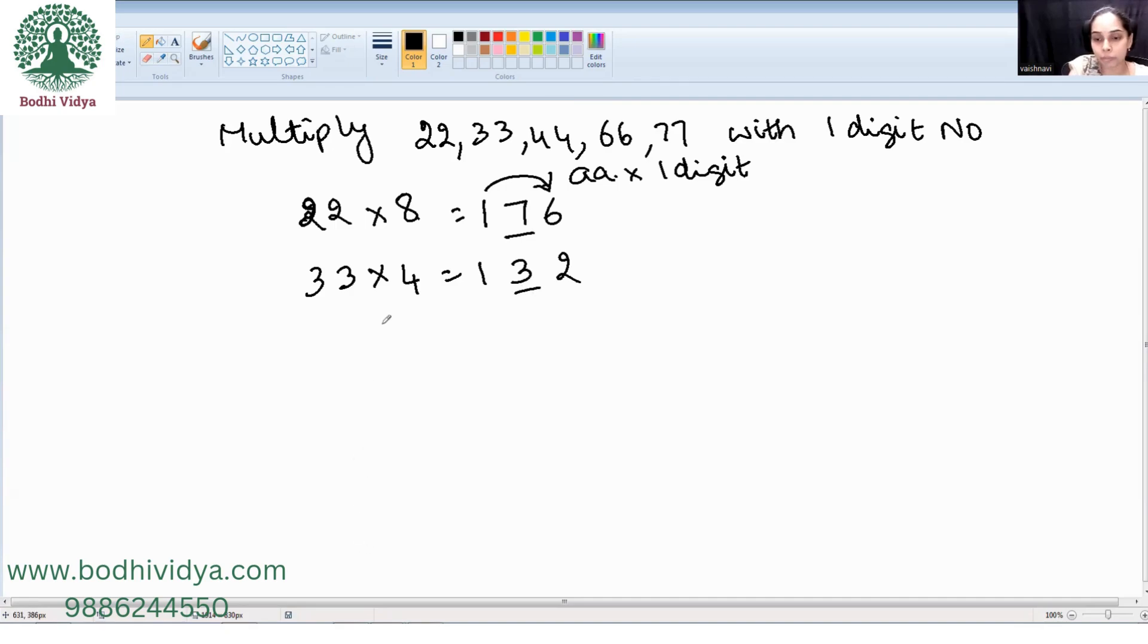Now 55 into 9. 5 times 9 is 45. Just add 4 plus 5, that is 9. So 495. Next, 44 into 9. 4 times 9 is 36. 3 plus 6 is 9, giving us 396. Next, 33 into 7. 3 times 7 is 21. Just add 2 plus 1 for the in-between number. We get 3. Final answer is 231.